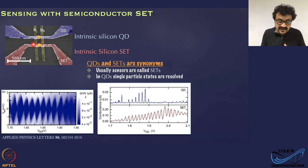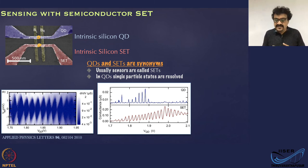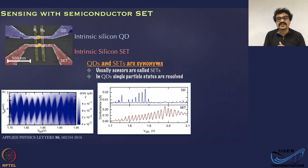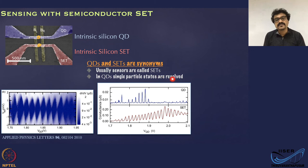The conductance of the quantum dot is shown here, and this is the conductance of the quantum dot sensed by the SET. Although in this case both quantum dots and SETs are very similar in size, sensors are typically referred to as SET and the quantum dots are the system you are studying.